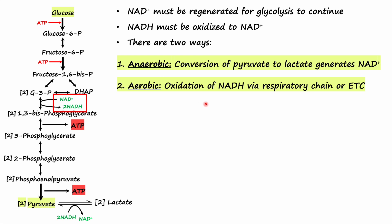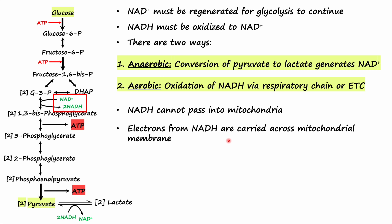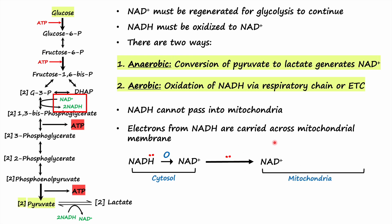In aerobic conditions, NADH must be oxidized into NAD+ via the respiratory chain or electron transport chain. However, as mentioned, NADH simply cannot pass the mitochondrial membrane. So one way to resolve this issue is that electrons from NADH are carried across the mitochondrial membrane, but not NADH itself. NADH in the cytosol is oxidized into NAD+, and electrons from this NADH are carried across the mitochondrial membrane. In the mitochondria, these electrons are then passed on to NAD+, which is reduced to NADH, and this NADH then gives up its electrons to the electron transport chain to synthesize ATP.